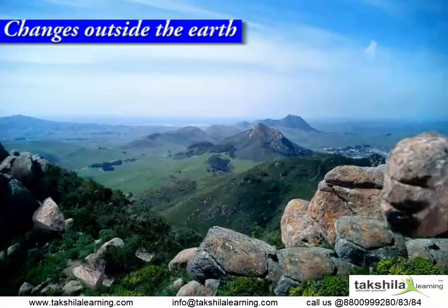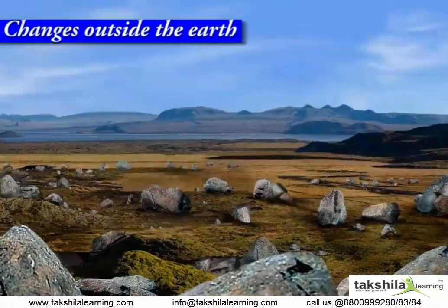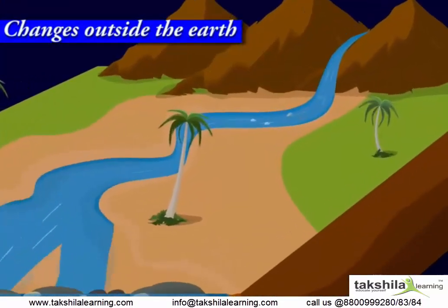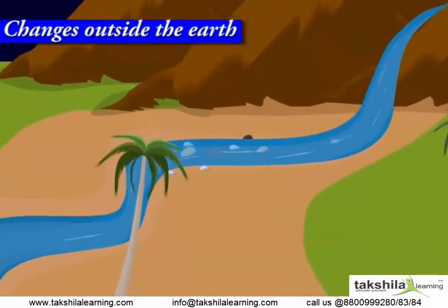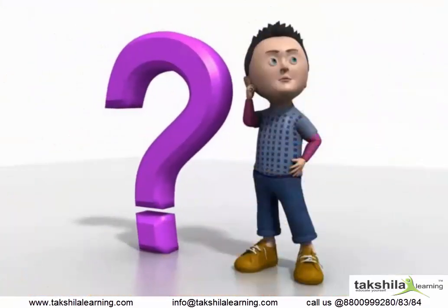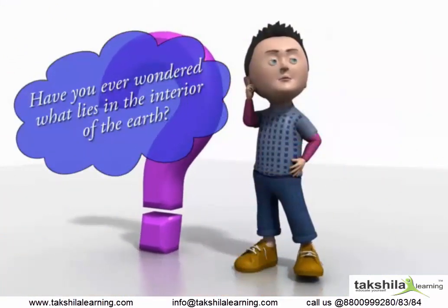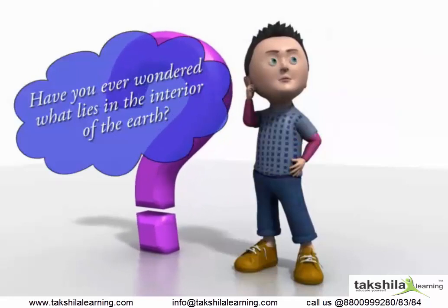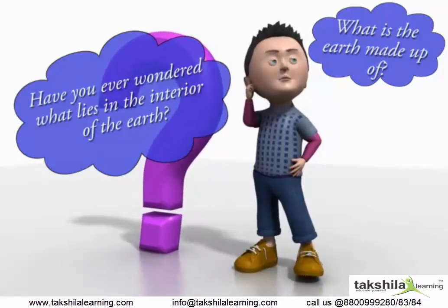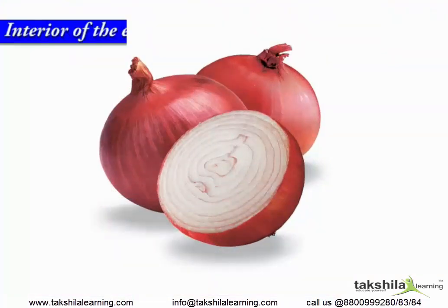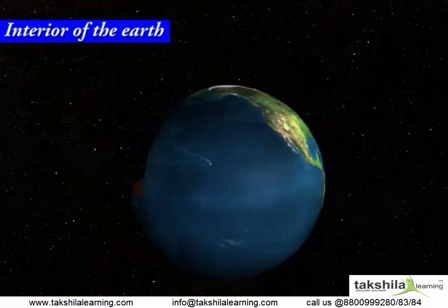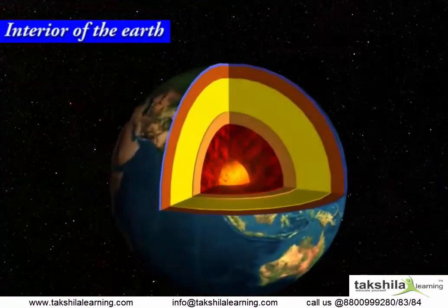And outside. Have you ever wondered what lies in the interior of the Earth? What is the Earth made up of? Just like an onion, the Earth is made up of several concentric layers with one layer inside another.